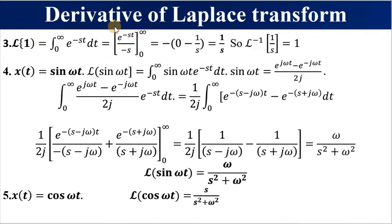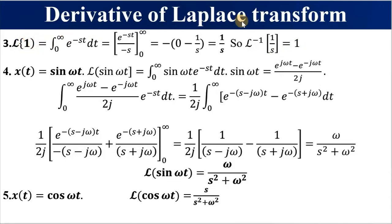Deriving the Laplace transform of a constant — in this case the Laplace transform of 1: the integral from 0 to infinity of 1 multiplied by e^(−st) dt. The integral gives e^(−st) divided by minus s, with limits 0 to infinity. Replacing t with infinity gives zero, and replacing t with zero gives 1, so the result simplifies to 1/s. The inverse Laplace transform of 1/s equals 1. For any constant A or B or C, the Laplace transform is that constant divided by s.